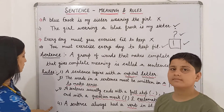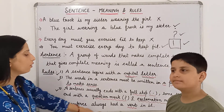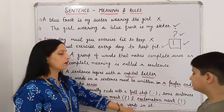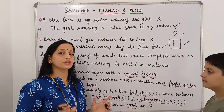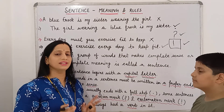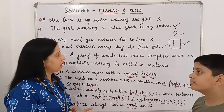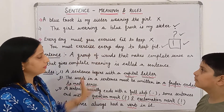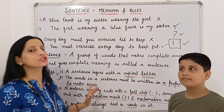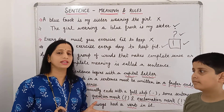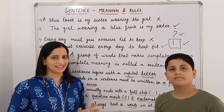The fourth rule: a sentence always has a verb in it. There should be a verb in a sentence. Now, on the basis of this, to understand this topic deeply, we will do some exercise.